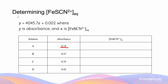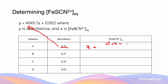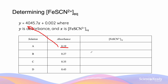So we take our value of 0.19 for solution A and substitute that into the formula for y. Rearranging: 0.19 = 4045.7x + 0.002, so x = (0.19 − 0.002) ÷ 4045.7. From here, we get the concentration of iron thiocyanate at equilibrium, which equals 0.0000465 mol/L.